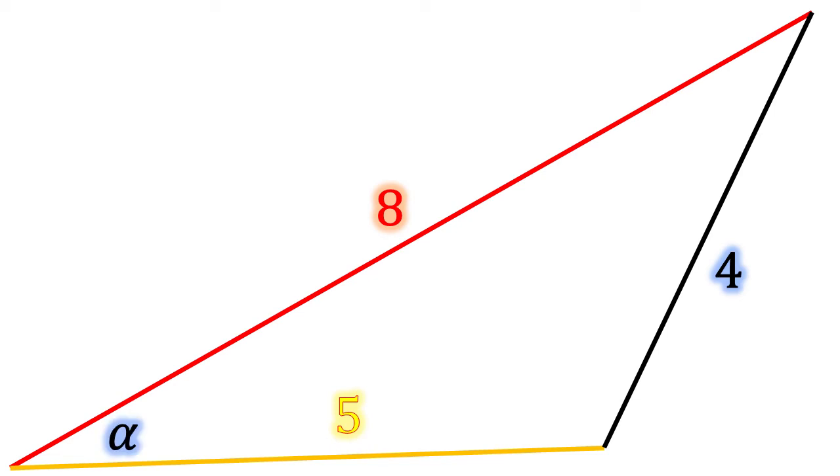Interior angles are alpha for the 4-leg, we'll call beta across from the 5-leg, and we'll call gamma that angle across from the 8-leg or the C-leg.